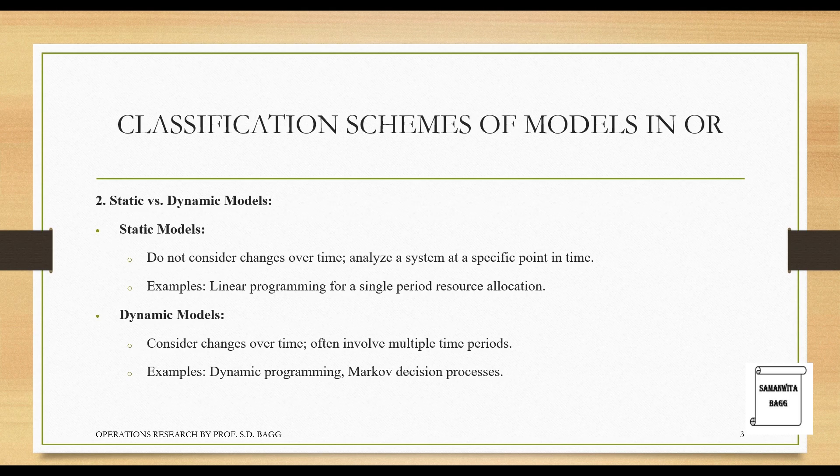Next is static versus dynamic models. Static models do not consider changes over time and analyze a system at a specific point in time. An example is linear programming for single-period resource allocation. Dynamic models consider changes over time and often involve multiple time periods. Examples include dynamic programming and Markov decision processes.